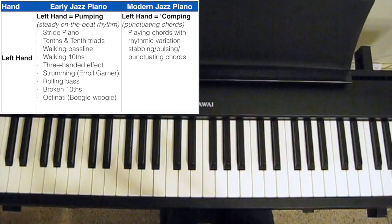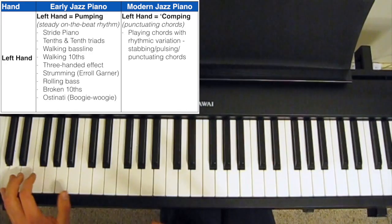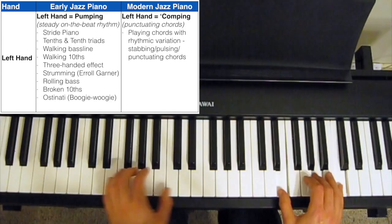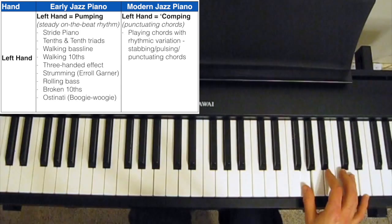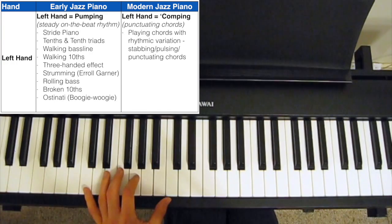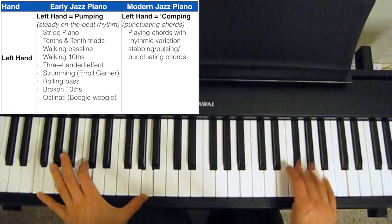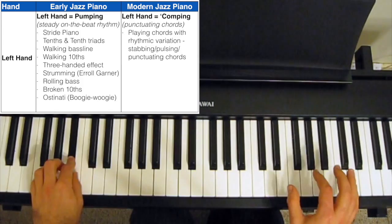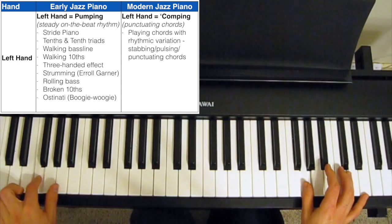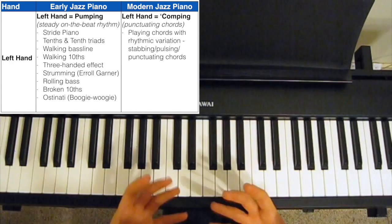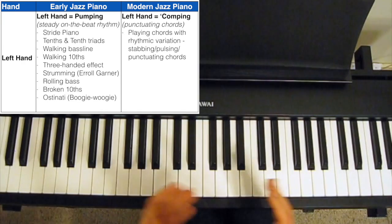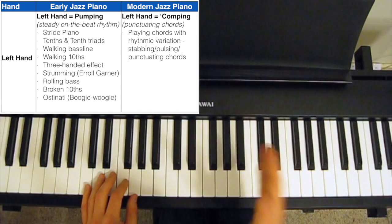So a really important technique that they used was stride piano, which is playing the bass note on beats 1 and 3 and the chord on beats 2 and 4. They also played tenths, so a tenth interval, or tenth triad, which goes root, fifth, third. And also used walking bass lines a lot. So those are really the three main techniques that early jazz pianists employed. And you see that they're all pretty rhythmically steady. They all play on the beat. The stride and the walking bass line play on every single beat on the beat.